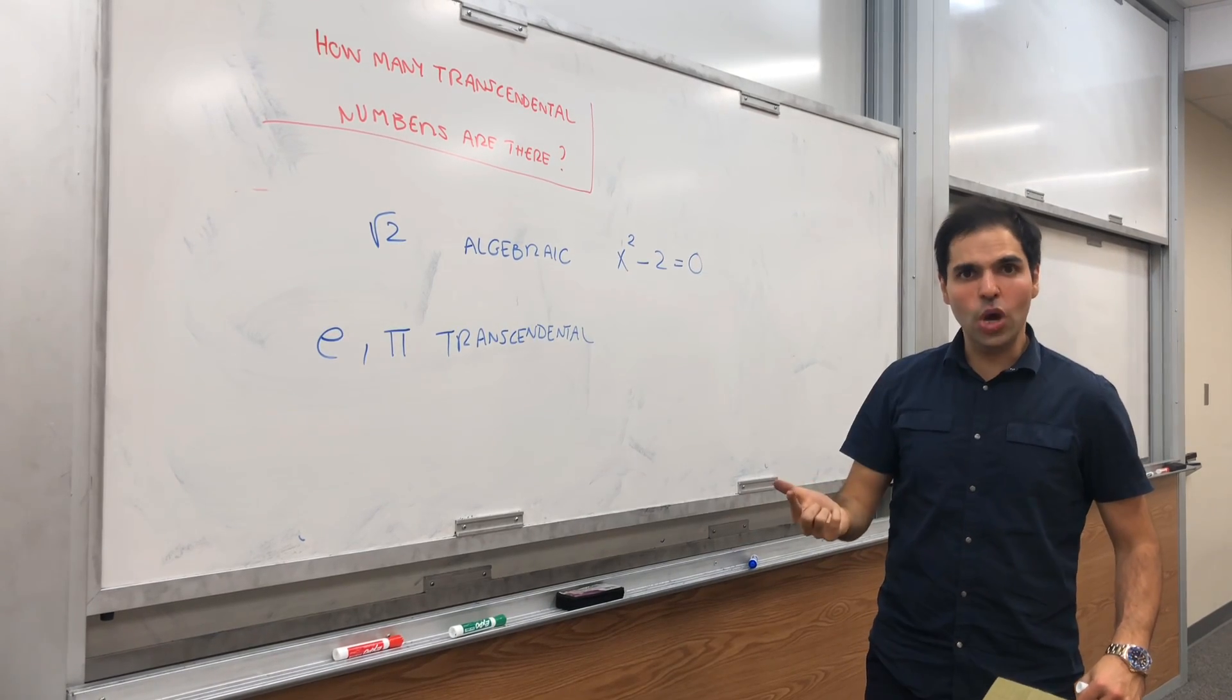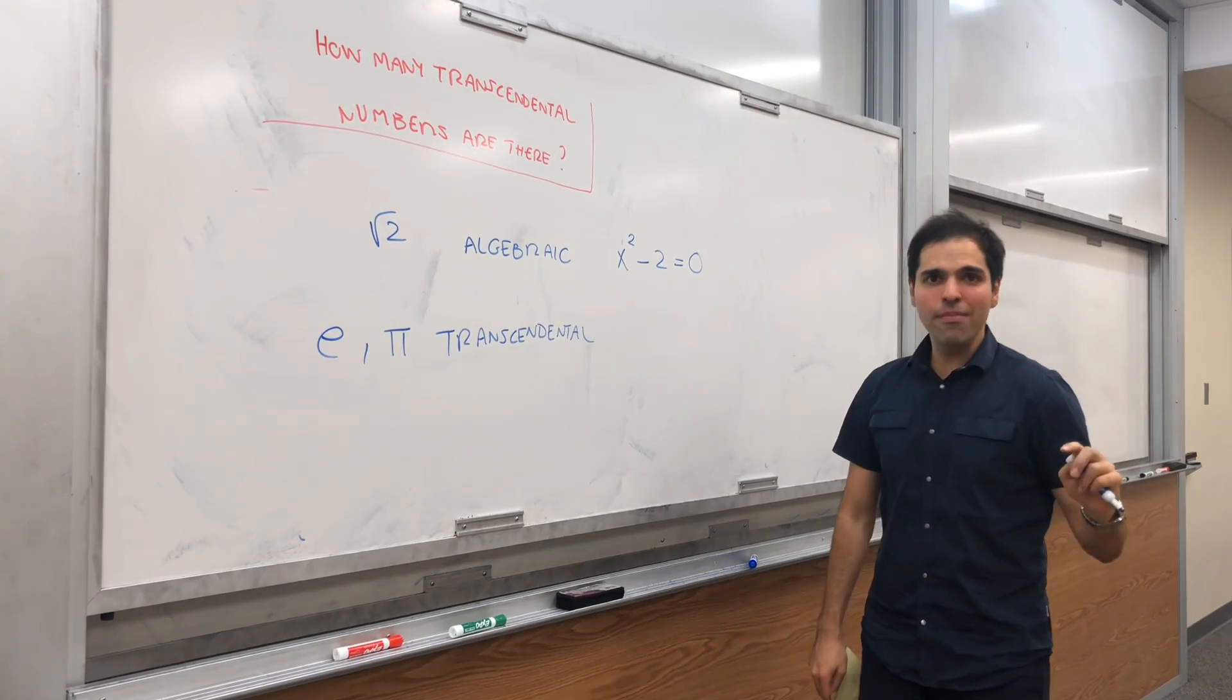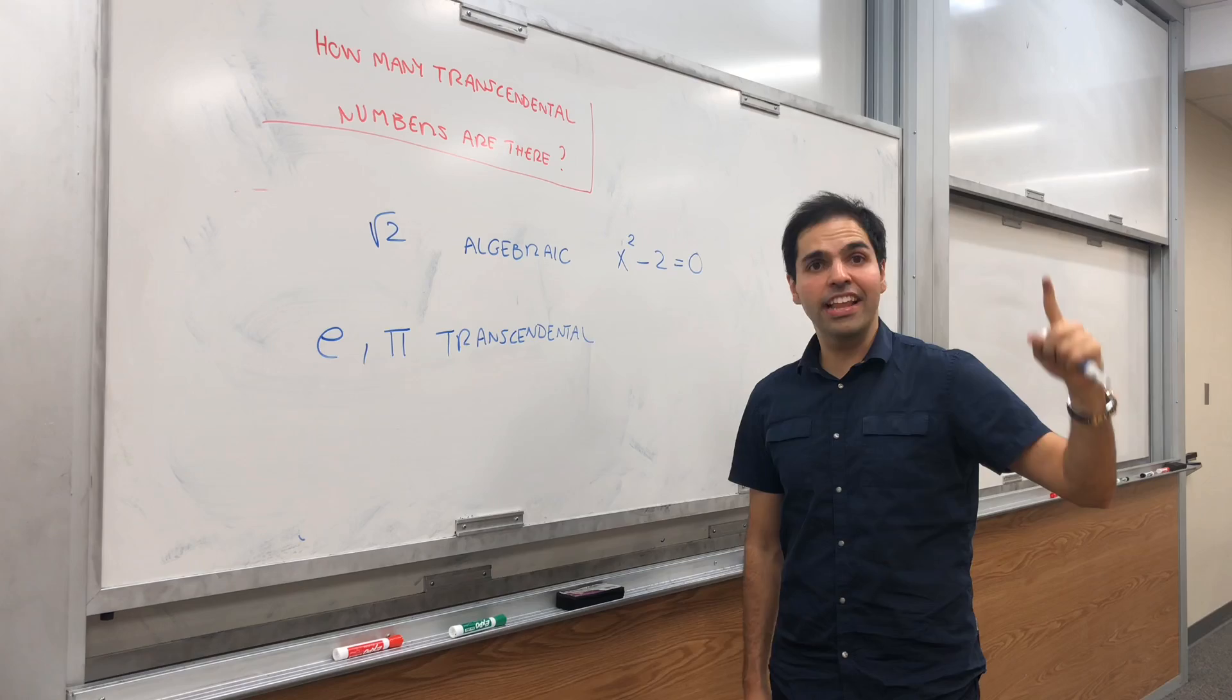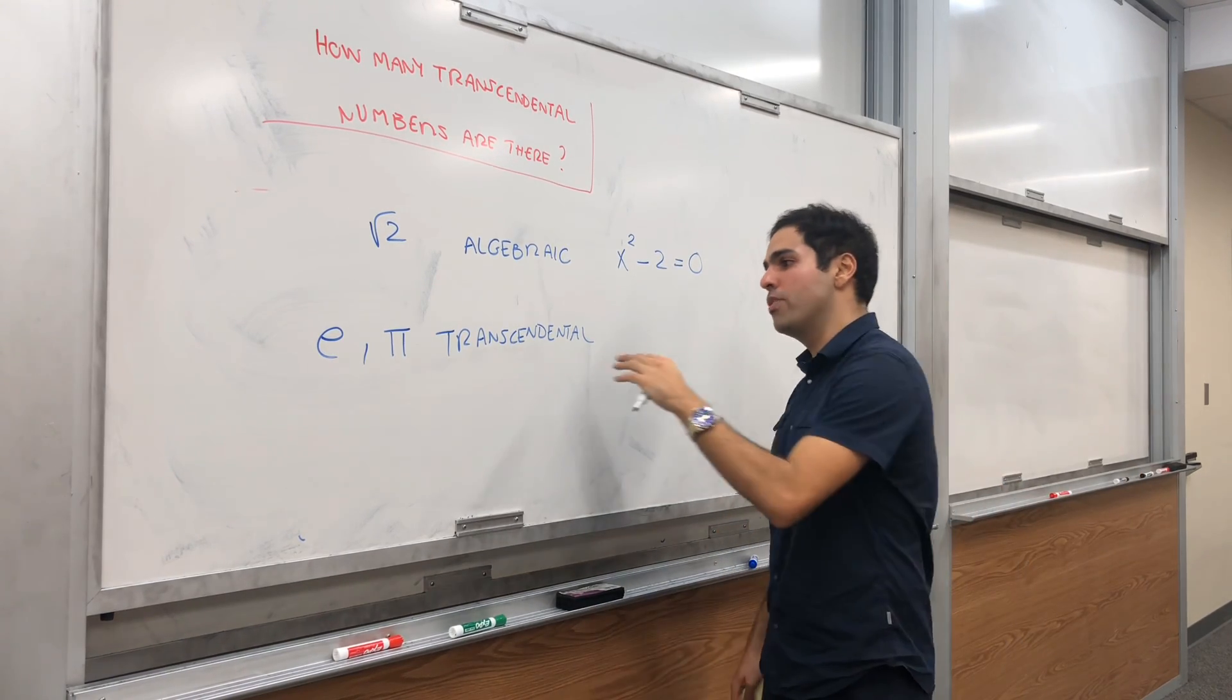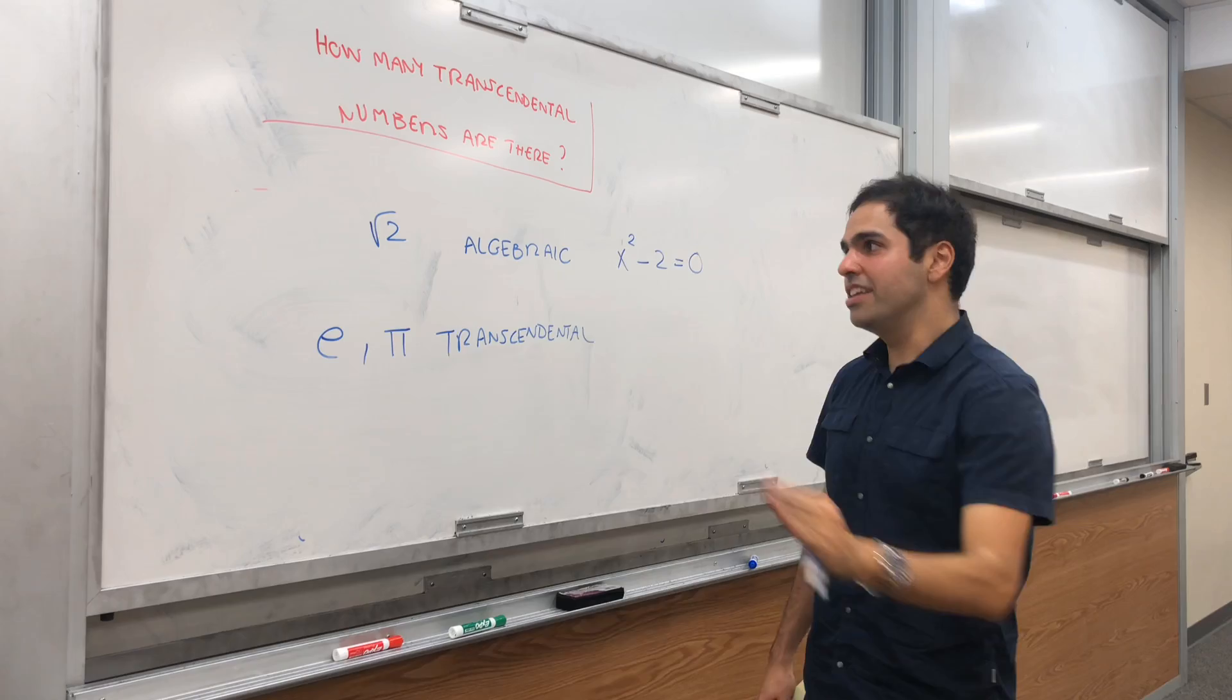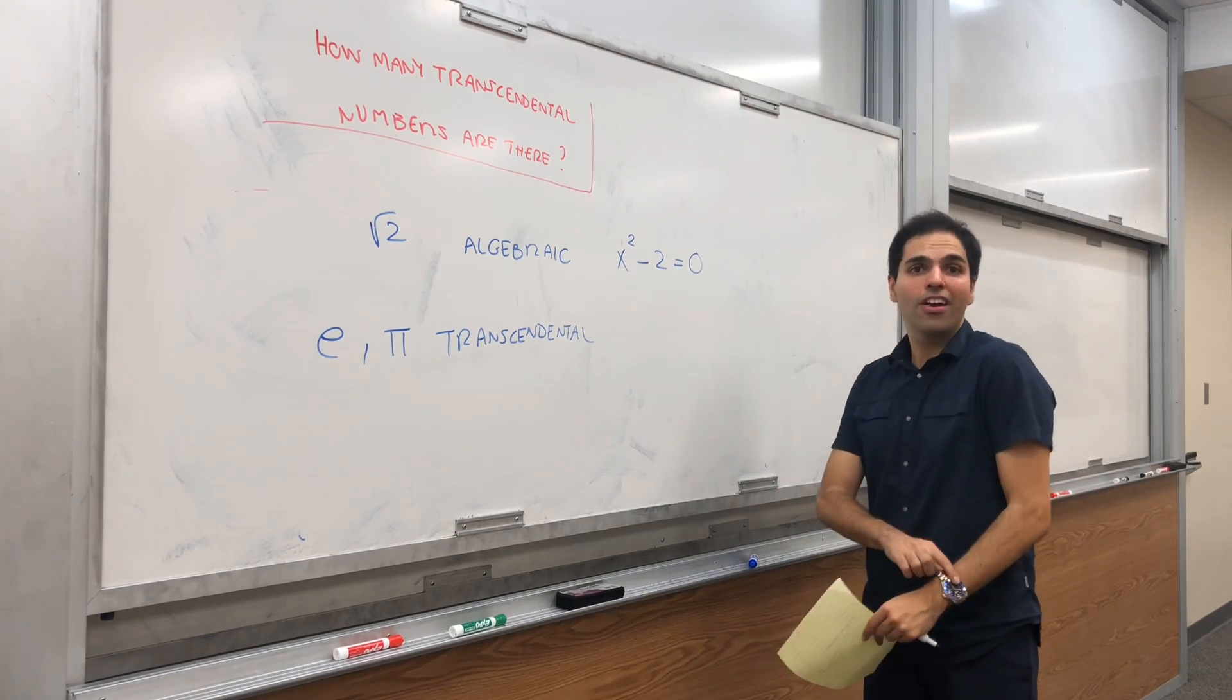What I want to show is those numbers like e or pi, those are actually the rule and not an exception. Namely, if you pick a real number out of the hat, the probability that it's transcendental is actually 1. So it's a very generic thing. A general real number will be transcendental. Algebraic numbers are the exception, which is super interesting because in life you mainly deal with algebraic numbers, but it turns out transcendental numbers are way more common.